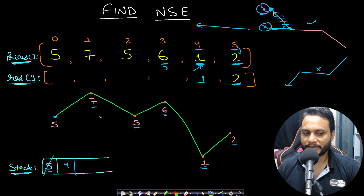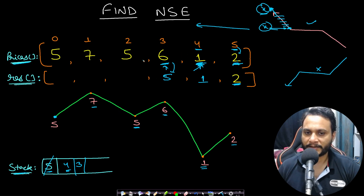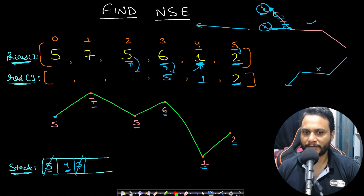Moving left to index 2 (value 5): check stack top index 2 (value 6) — 6 is not less than or equal to 5, so pop it. Check index 3 (value 1) — yes, 1 ≤ 5. Discount = 1, final price = 5 - 1 = 4. Push index 2. Next, index 1 (value 7): check stack top index 2 (value 5) — 5 ≤ 7, so discount = 5, final price = 7 - 5 = 2. Push index 1.